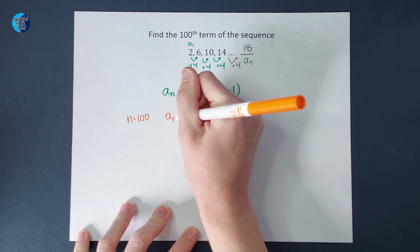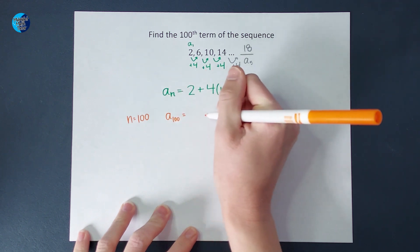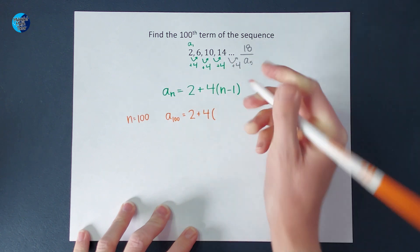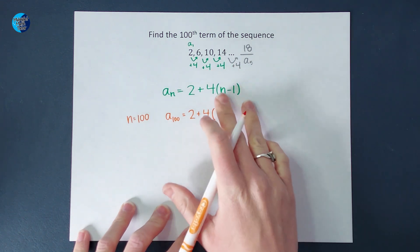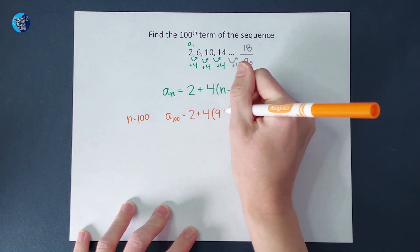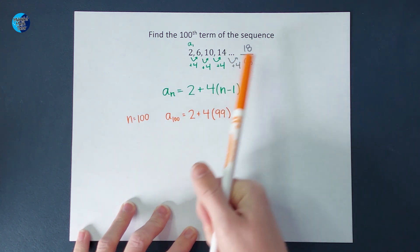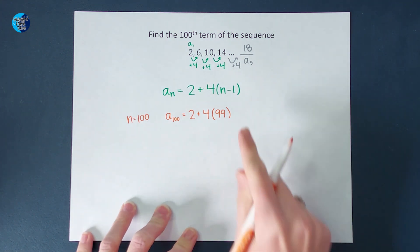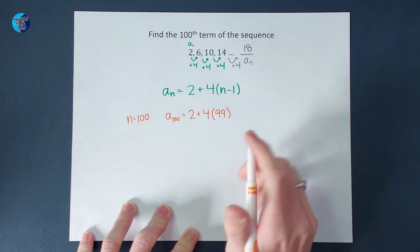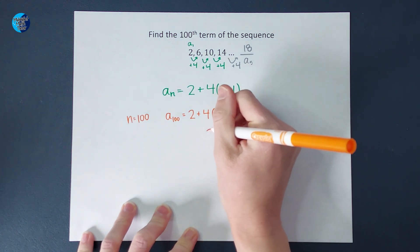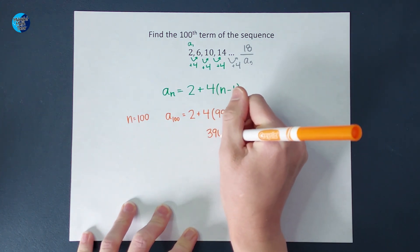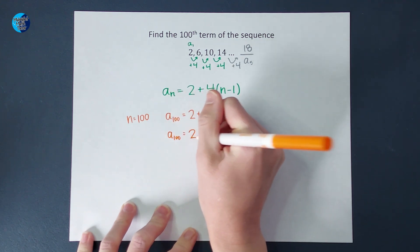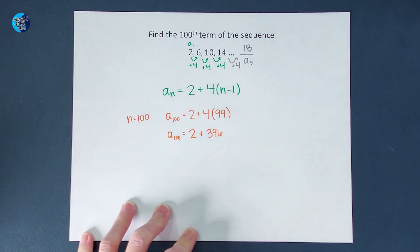a sub 100 is equal to 2 plus 4 times n minus 1. So 100 minus 1, which gives me 99. Because that's what I would be doing, right? I would add 4 ninety-nine times. Okay, when I do 4 times 99, I get 396. But that's not the answer.